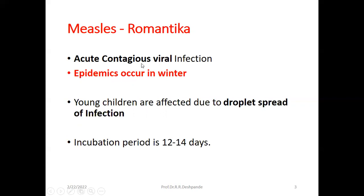This is an acute contagious viral infection. Contagious means it can spread from one child to another child. This is epidemic and occurs in the winter season, especially November, December, January. Young children are affected due to droplet spread of infection. The incubation period is 12 to 14 days — meaning the period between the virus entering the body and symptoms appearing is nearly 14 days.